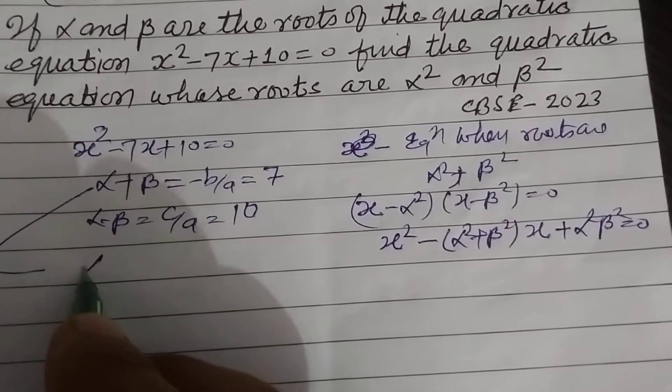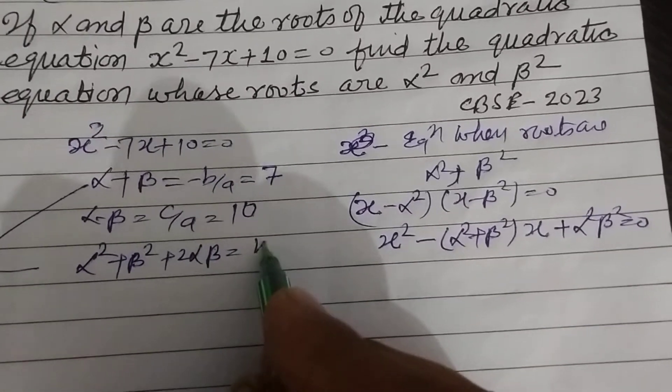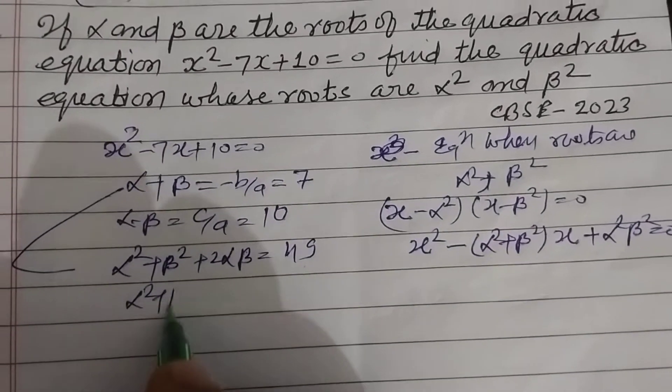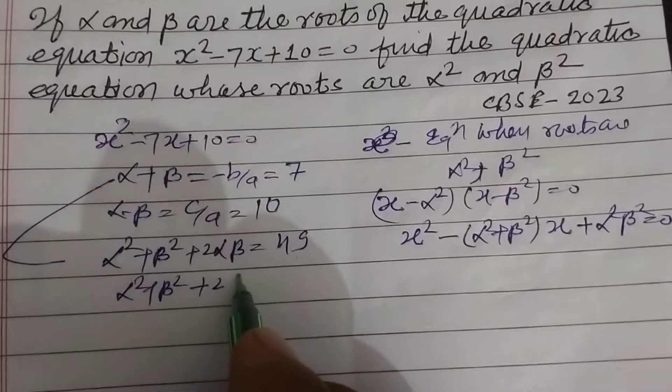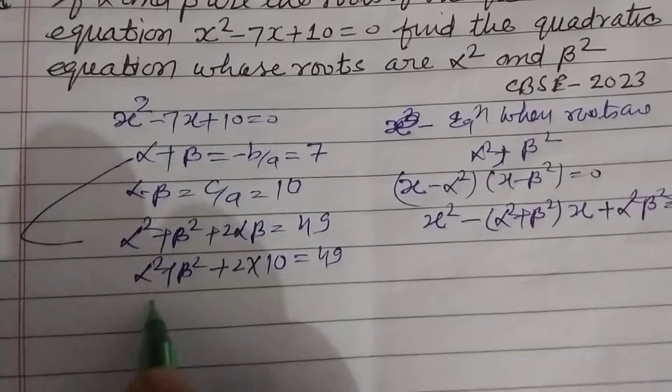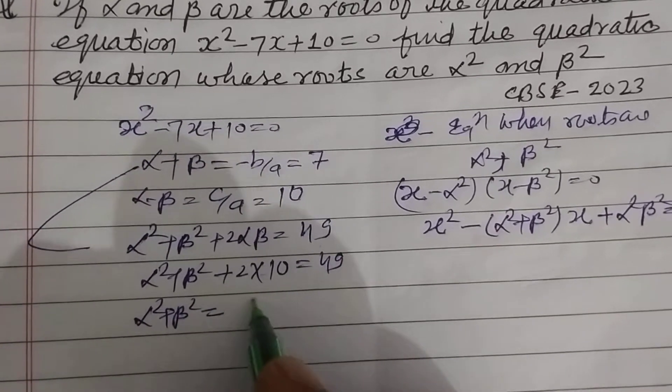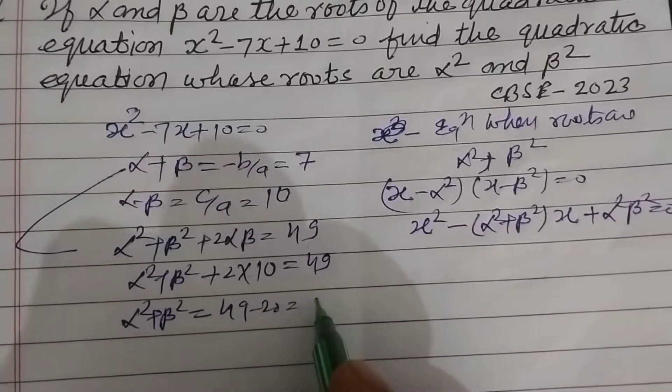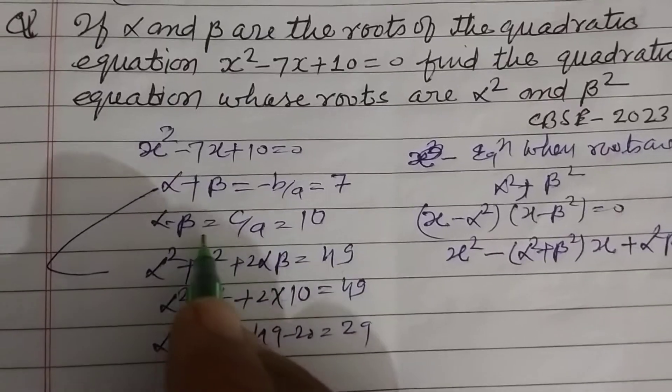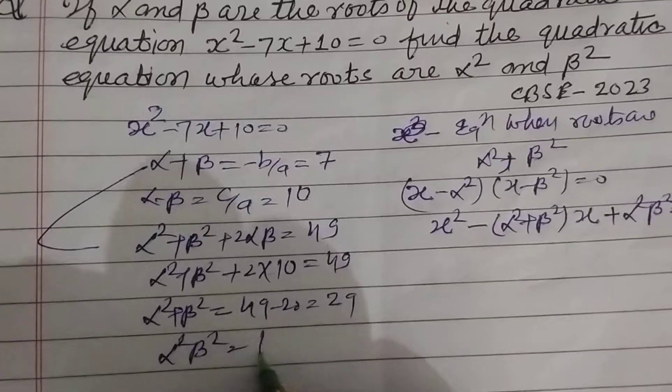From here, α² + β² = (α + β)² - 2αβ. Putting values: (7)² - 2(10) = 49 - 20 = 29.